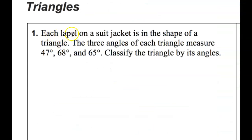Let's do this first problem together. It says each lapel on a suit jacket is in the shape of a triangle. The three angles of each triangle measure 47, 68, and 65 degrees. Classify the triangle by its angles. So the most important thing here is we're coming up with only one name, and it's the name by the angle. So it's either going to be acute, obtuse, or right. So based on the fact that we have 47, 68, and 65, what kind of triangle is this based on its angles? Very good. If you said acute, you are correct. And the reason why you're correct is none of these are 90 degrees, so it's not a right triangle. And none of these are greater than 90 degrees, so it's not obtuse. So acute's the only possibility.